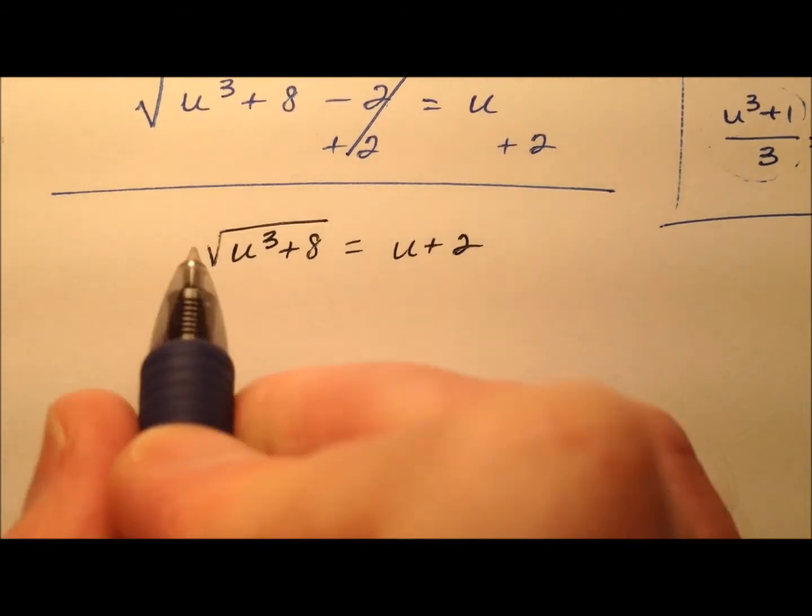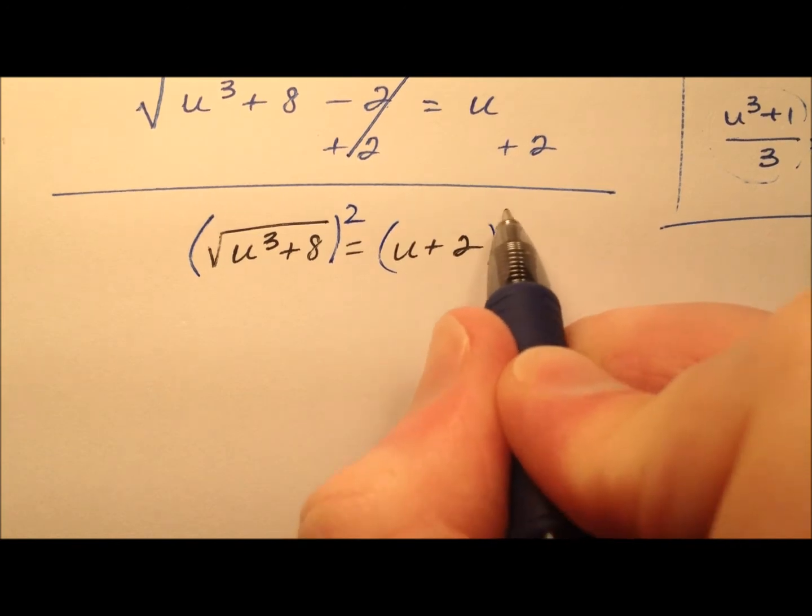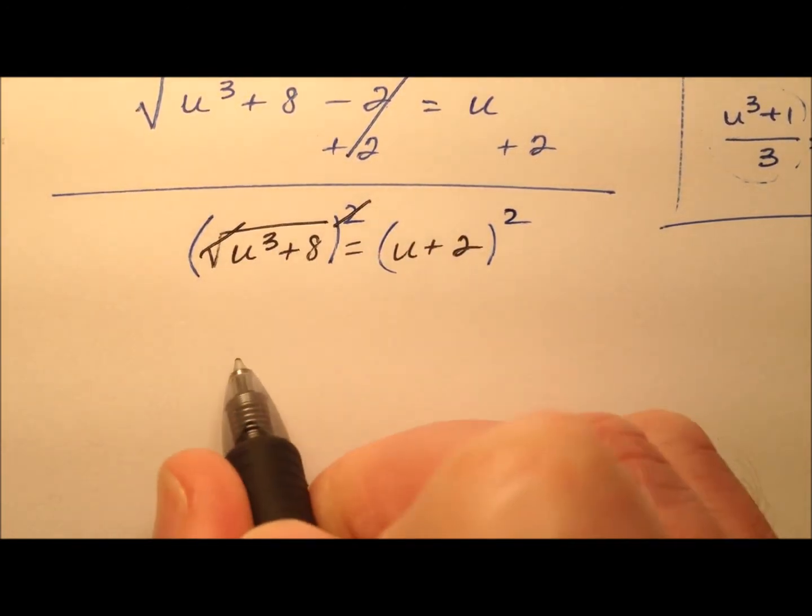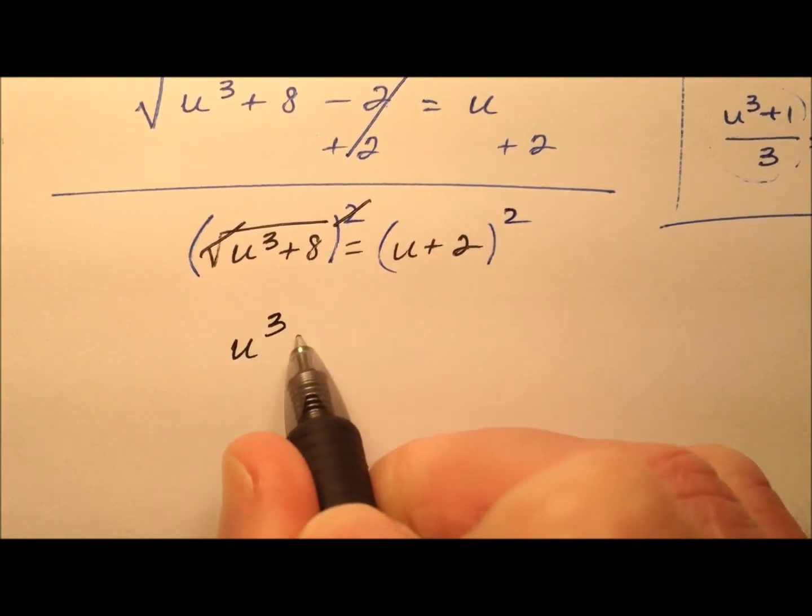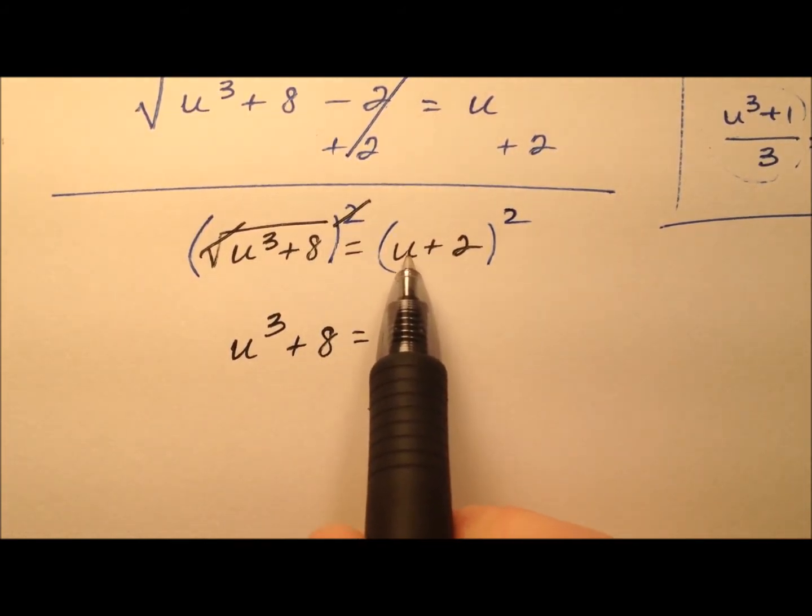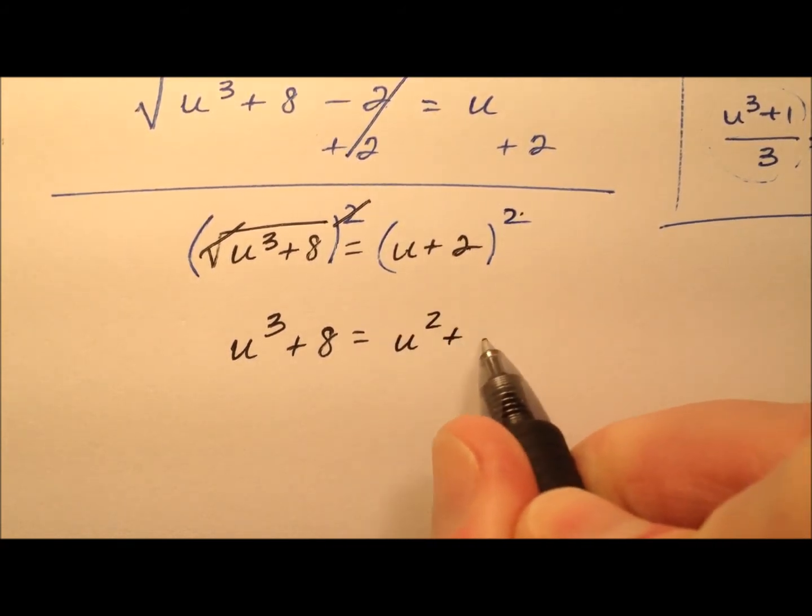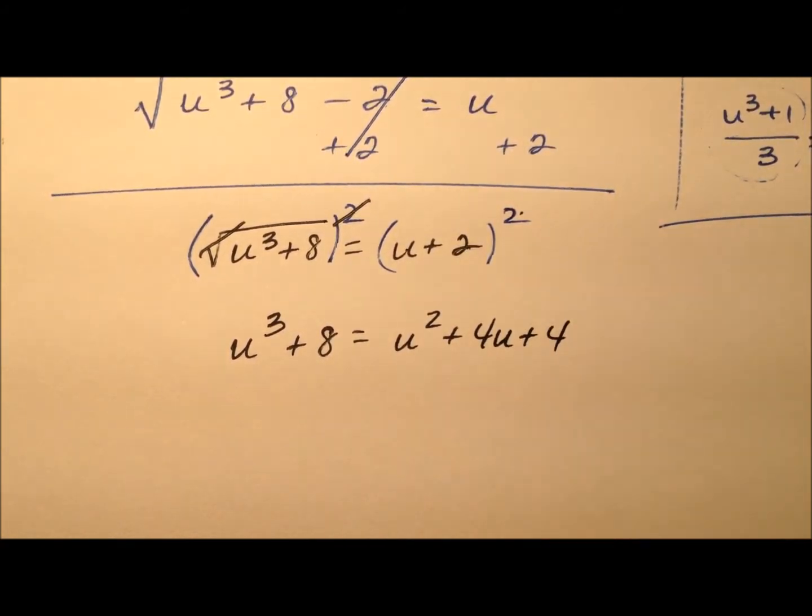Okay, so we can square both sides in order to get rid of that square root, and that's nice because the square and the square root cancel. So u cubed plus 8 equals, and then we have this binomial, u plus 2, and we're going to square it. So u squared plus 4u plus 4.